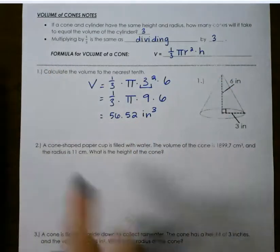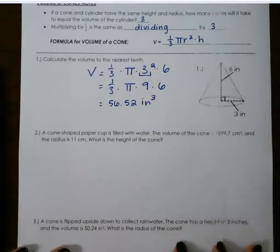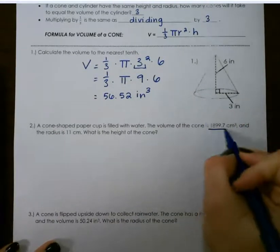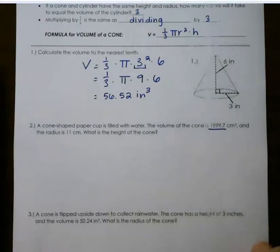Look at the next one. A cone shaped paper cup is filled with water. The volume of the cone is 1,899.7 centimeters cubed, and the radius is 11 centimeters. What is the height?